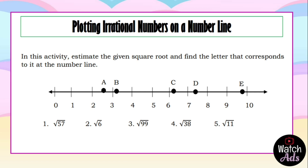We find the least value, which is the square root of 6, and answer letter A. Next is the square root of 11, which is B. Then the square root of 38 is letter C. Then 57 is D, and 99 is E. We simply arrange all the radicands in ascending order from least to greatest to find the answers.